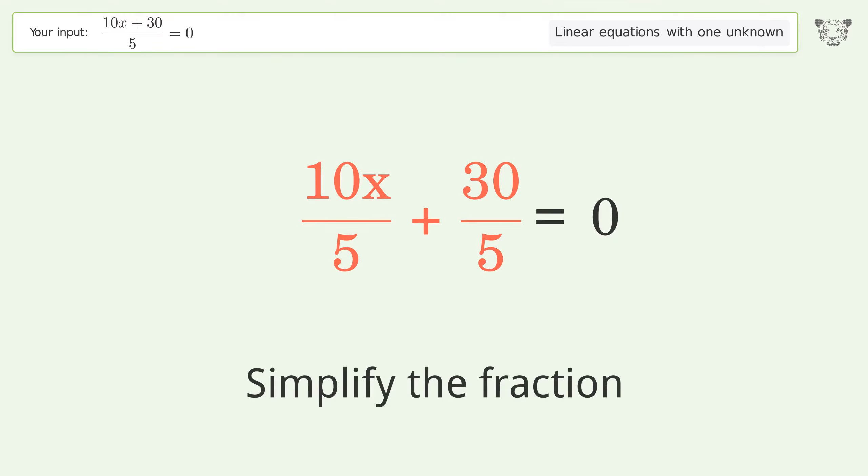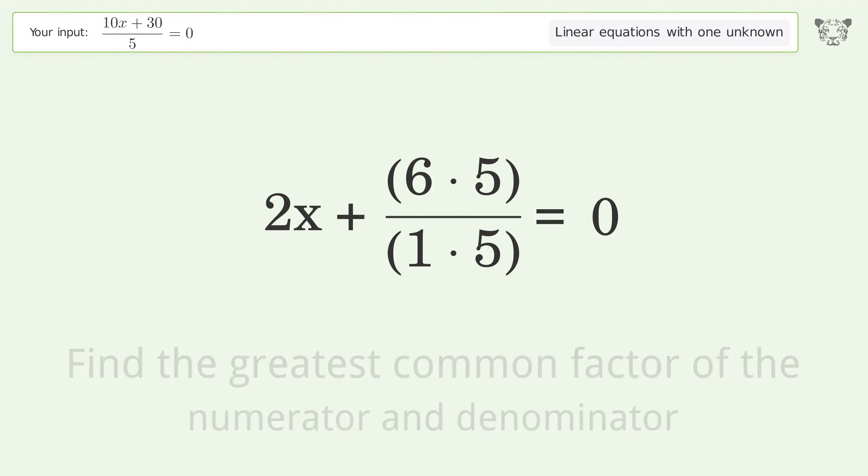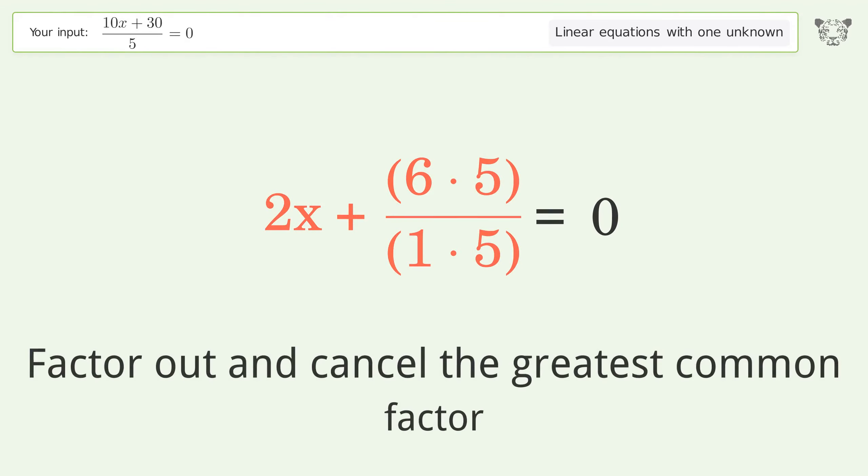Simplify the fraction. Find the greatest common factor of the numerator and denominator. Factor out and cancel the greatest common factor.